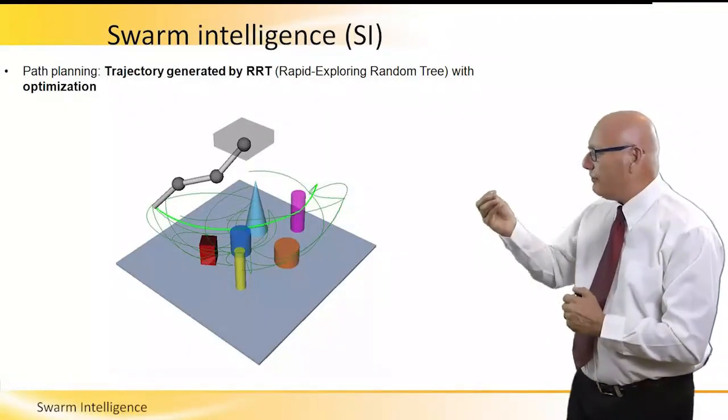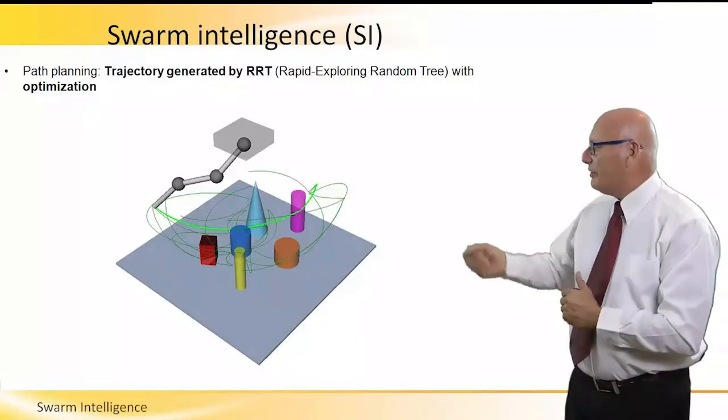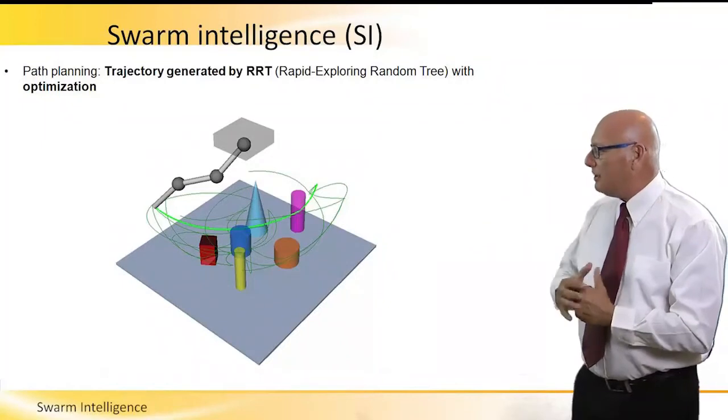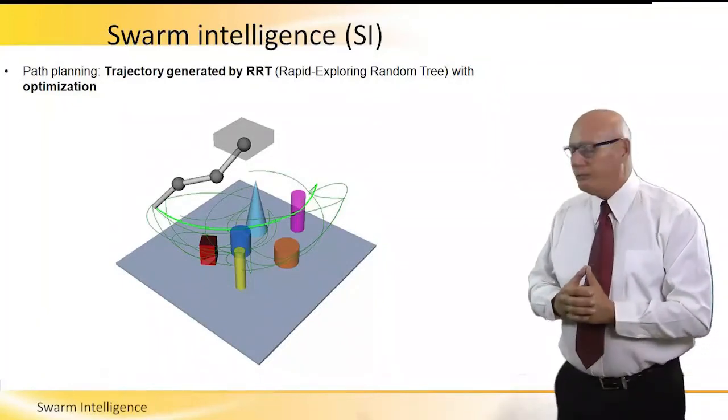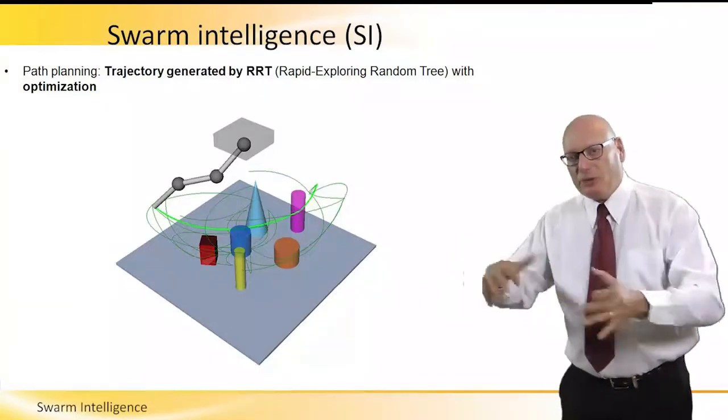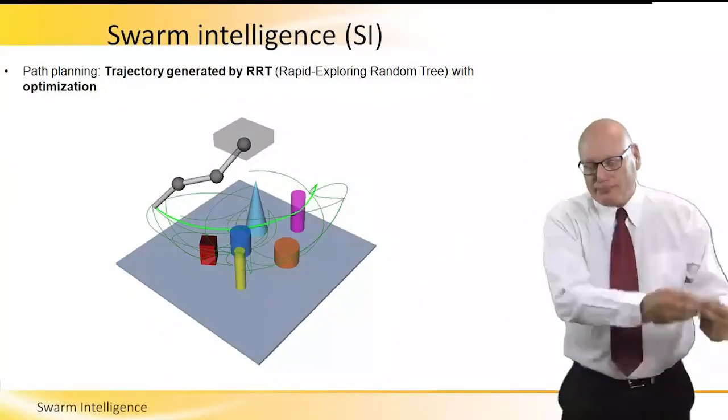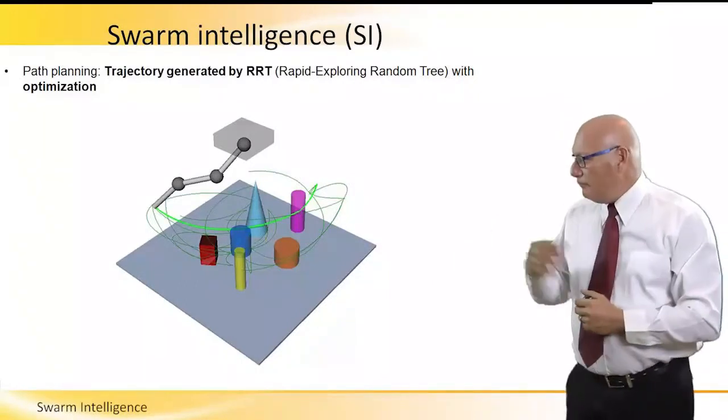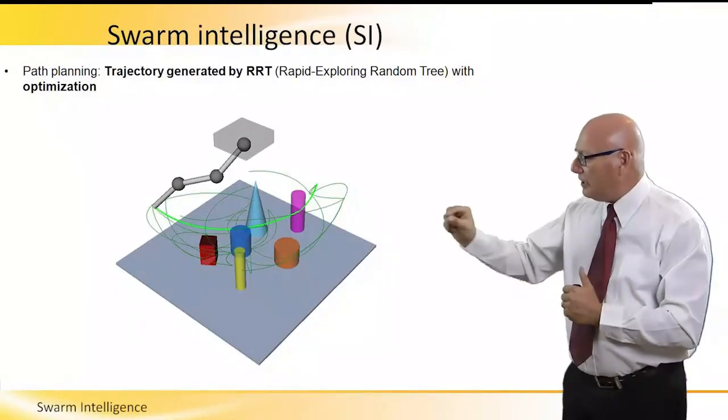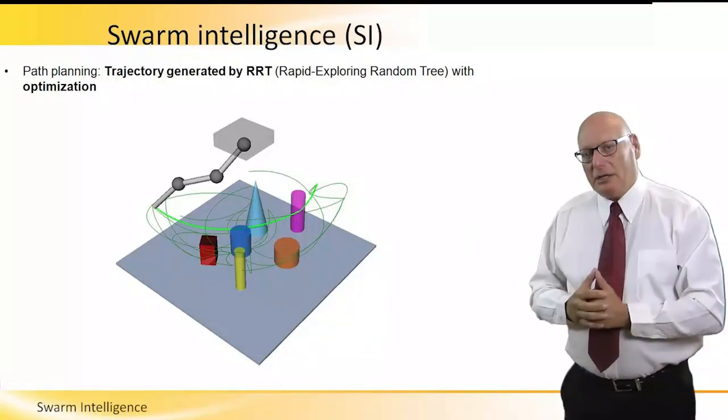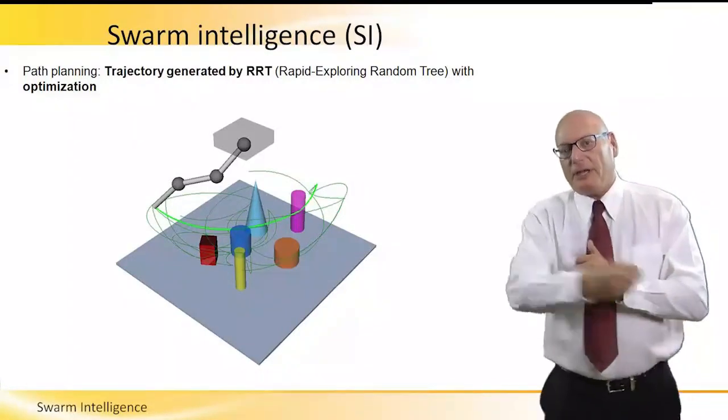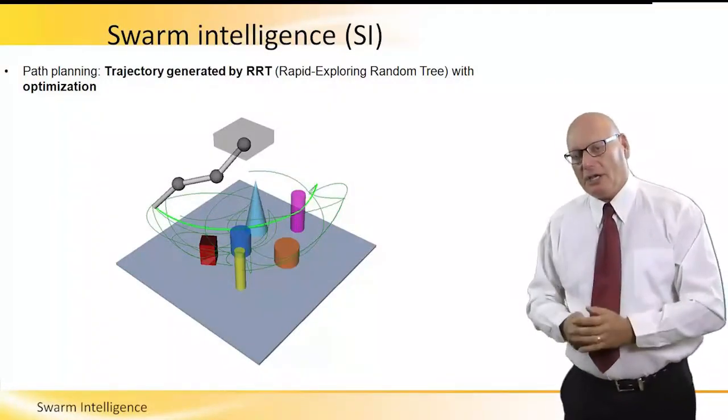So we have a path planning here, where the trajectory is operated by RRT technology, rapid exploring random tree with optimization. First of all, the robot moves in between the obstacles in order to reach from point A to point B, but then with the green line, the bright green line, it is the optimized path to go from point A to point B without hitting any obstacle.